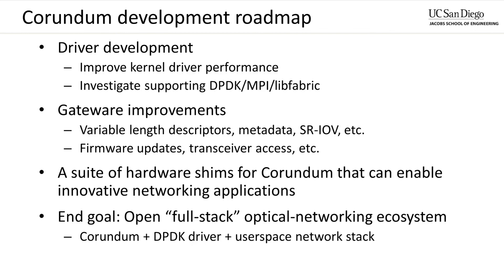The current development roadmap for Corundum looks something like this. We would like to improve the performance of the current Linux driver through additional optimization, as well as develop a driver for DPDK. Other software APIs, such as MPI and LibFabric, are also under consideration. On the hardware side, there are a number of improvements to be made. Variable-length descriptors can improve PCI Express link utilization. Additionally, they are much more expressive, enabling extensive metadata support, which is useful for interfacing with hardware accelerators. For applications involving virtualization, implementing SR-IOV can significantly improve performance. Ancillary features, including in-band firmware updates and console access, will support the use of Corundum in larger testbeds. The ultimate goal is to provide a prototyping platform that covers the entire networking stack from the physical layer all the way up to the application.